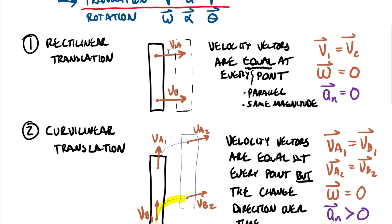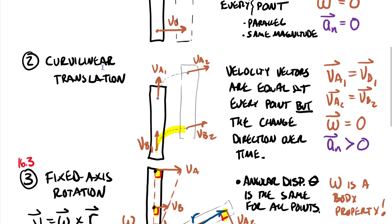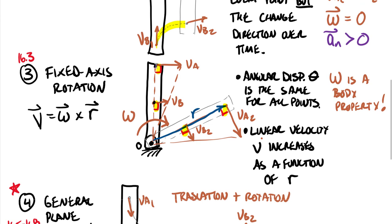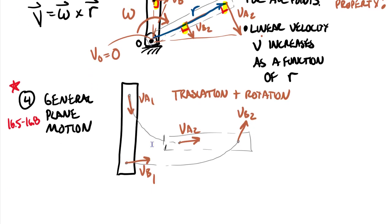We spend probably 70 to 80 percent of our time in Chapter 16 on general plane motion — it's the star of the show. You can interpret the kind of motion by knowing something about the velocity of points on the body: parallel and equal velocities mean rectilinear translation; parallel at an instant but changing direction while maintaining equal magnitude means curvilinear translation; parallel but linearly decreasing toward the center of rotation means fixed axis rotation — where V at the fixed point equals zero but angular velocity omega still exists as a body property. In general plane motion, we physically and computationally combine translation and rotation.